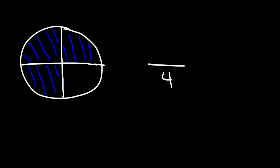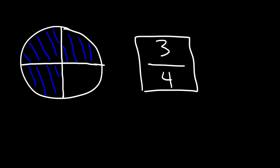There are four equal parts of the circle and three of those four parts were shaded, so three fourths of the circle is shaded. Now let me give you another illustration. So let's say we have a circle again and this time I'm going to divide the circle into eight equal parts.